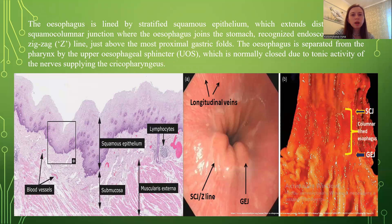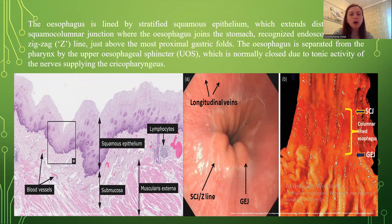The esophagus is lined by stratified squamous epithelium, which extends distally to the squamocolumnar junction where the esophagus joins the stomach, recognized endoscopically by a zigzag line just above the most proximal gastric folds. The esophagus is separated from the pharynx by the upper esophageal sphincter, which is normally closed due to tonic activity of the nerves supplying the cricopharyngeus.